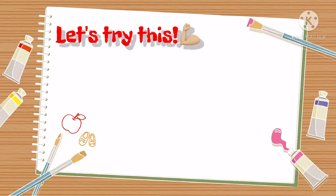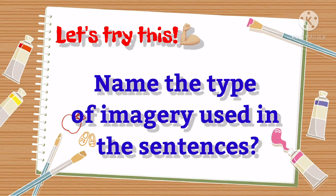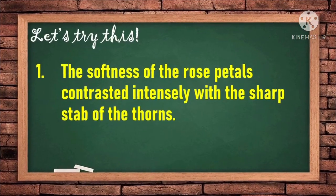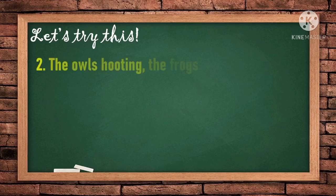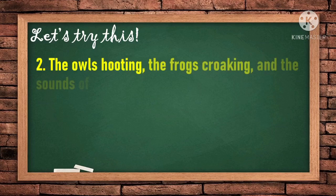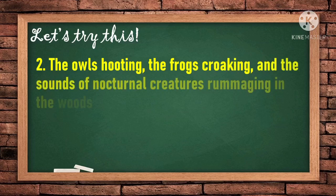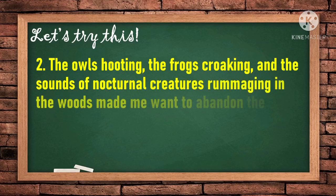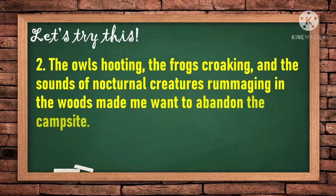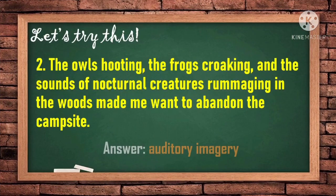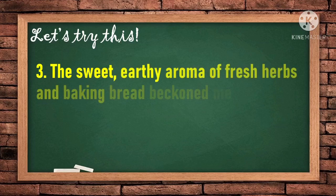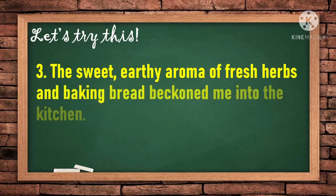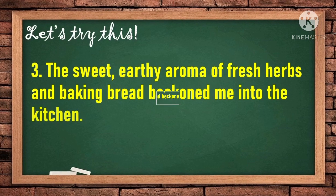Now let's try this — name the type of imagery used in the following sentences. Number one: 'The softness of the rose petals contrasted intensely with the sharp stab of the thorns.' Number two: 'The owl's hooting, the frogs' croaking, and the sounds of nocturnal creatures rummaging in the woods made me want to abandon the campsite.' Number three: 'The sweet, earthy aroma of fresh herbs and baking bread beckoned me into the kitchen.'